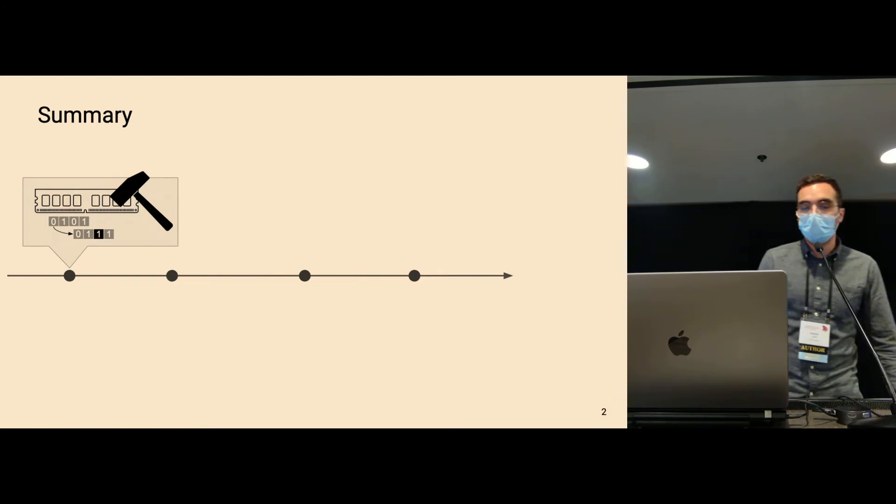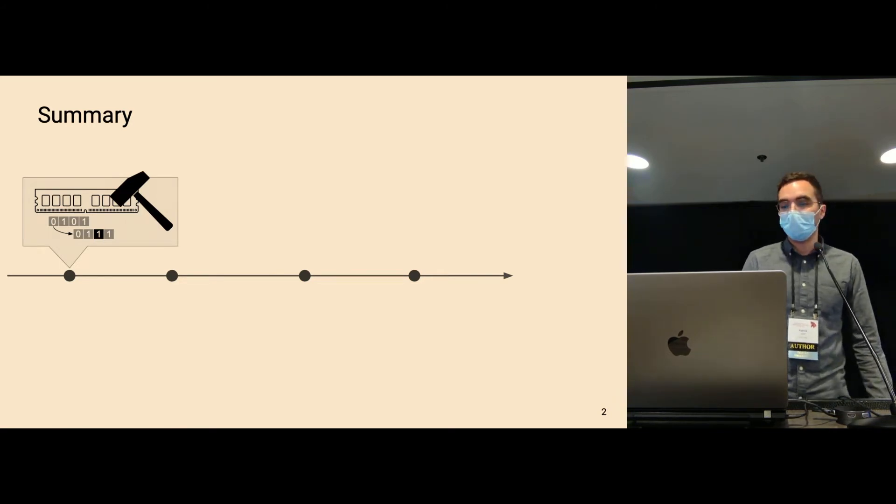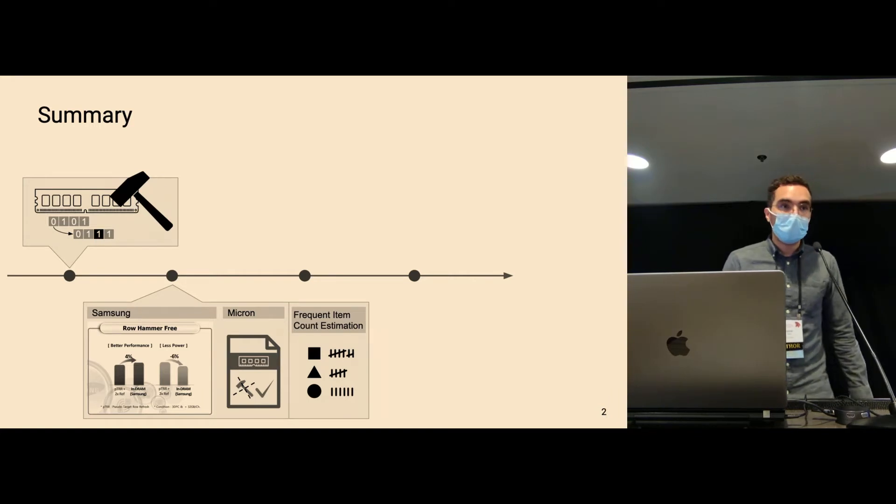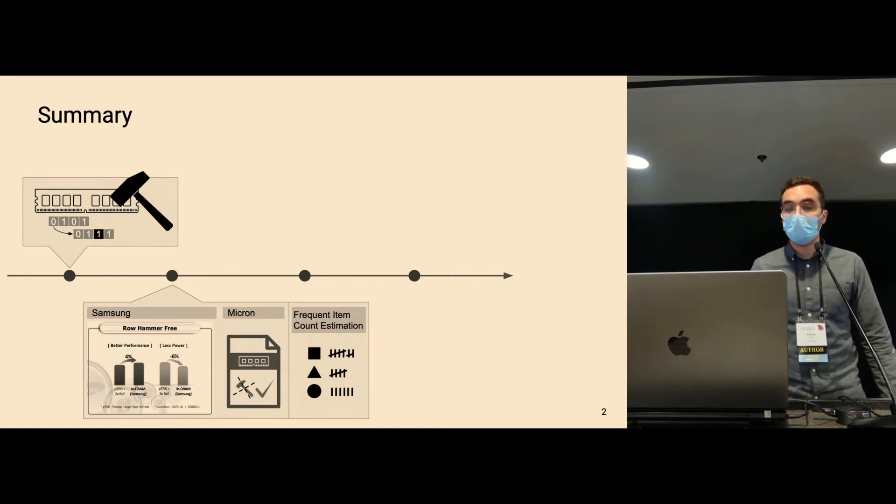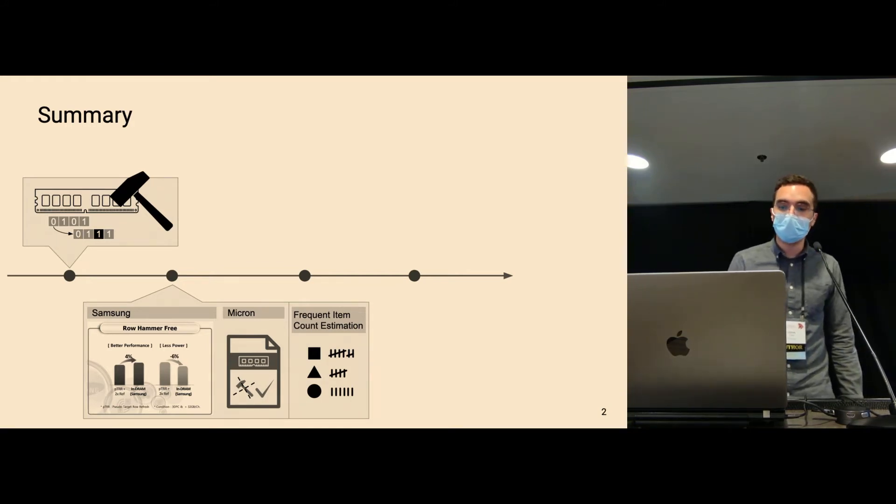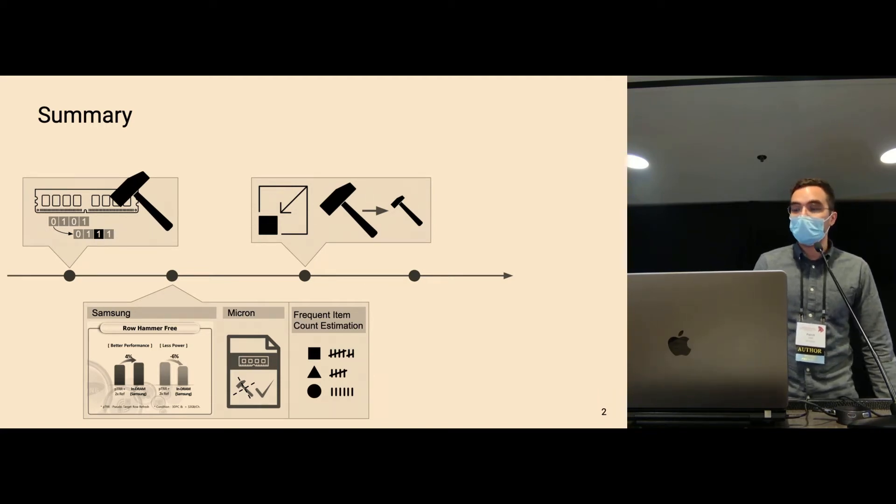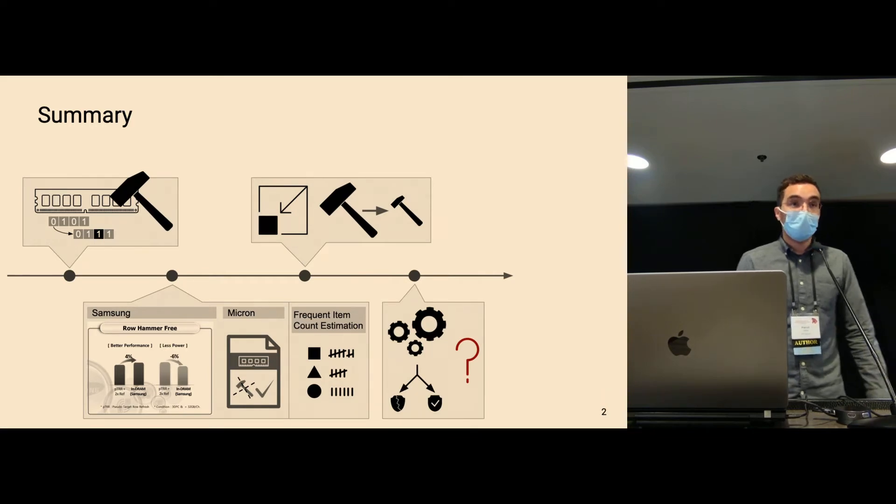You've seen in the past the row hammer bit flips can compromise data integrity. As a reaction to that, DRAM manufacturers such as Samsung and Micron deployed mitigations on their devices called target row refresh. These mitigations essentially try to estimate the rows that have been accessed most frequently and then send a preventive refresh before the periodic refresh happens. However, DRAM technology scaling has drastically reduced the number of hammers required by the aggressors to trigger bit flips, and this makes this estimation very challenging. Still today there exists no tool or methodology that allows you to estimate how well these estimations work and to explore the corner cases.